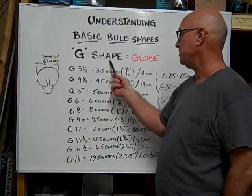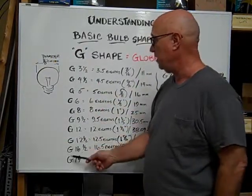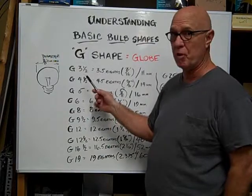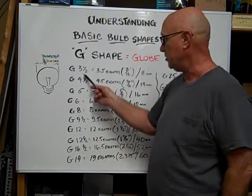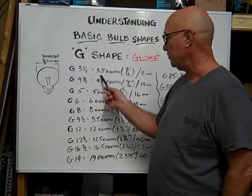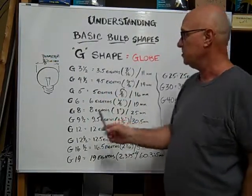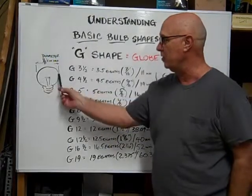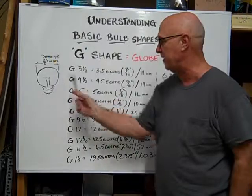G stands for globe. When you see this number G and you have a globe shape bulb, round shape bulb, the number following, like this G three and a half, is equal to 3.5 eighths of an inch. So the diameter of a globe envelope is measured in eighths of an inch.